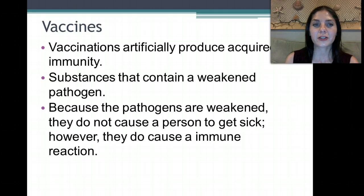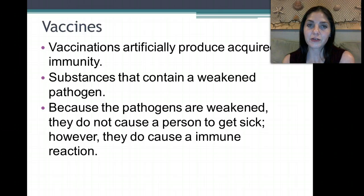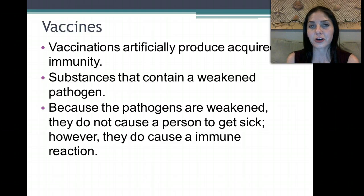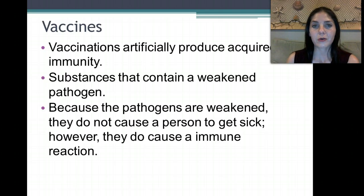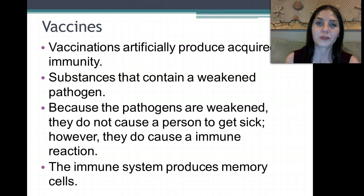Substances that contain a weakened or killed pathogen are in vaccines. When I got my flu shot, it was a dead portion of the flu virus — they injected me with a dead strain, and now my body is producing antibodies for that strain. Sometimes a vaccine contains just weakened portions of a virus or bacteria. Because those pathogens are weakened, they don't cause the person to get sick; however, they do cause an immune reaction. The immune system produces memory cells that will remember how to kill it if infected with the full-blown pathogen.